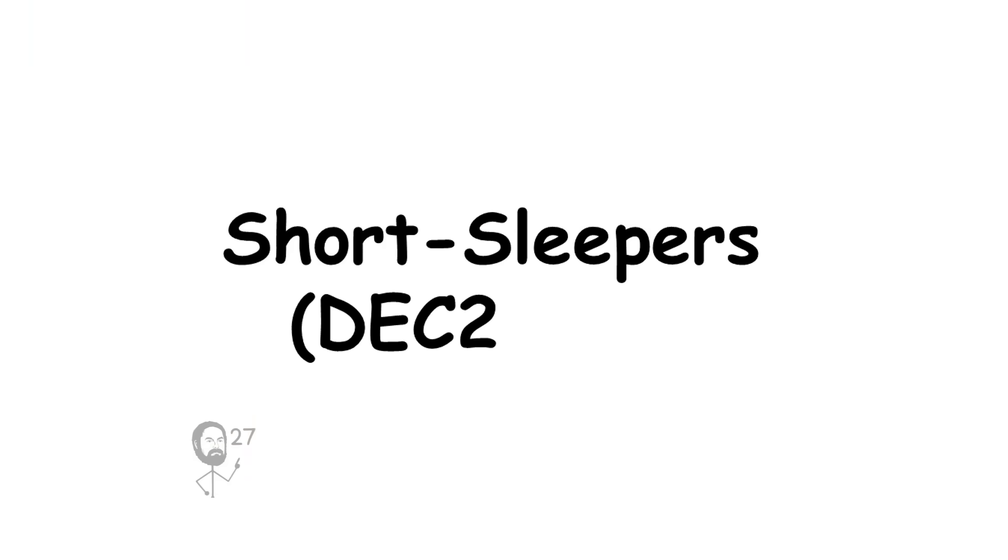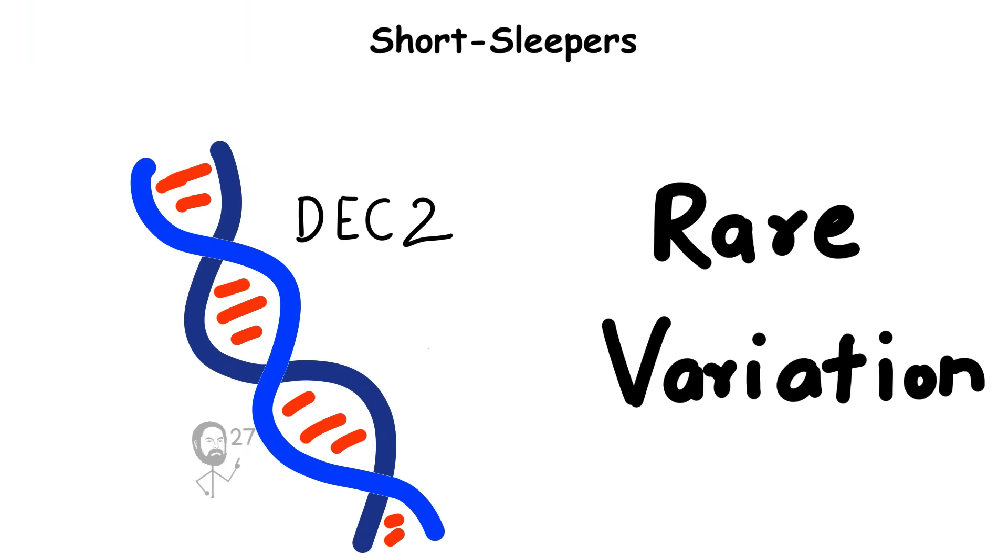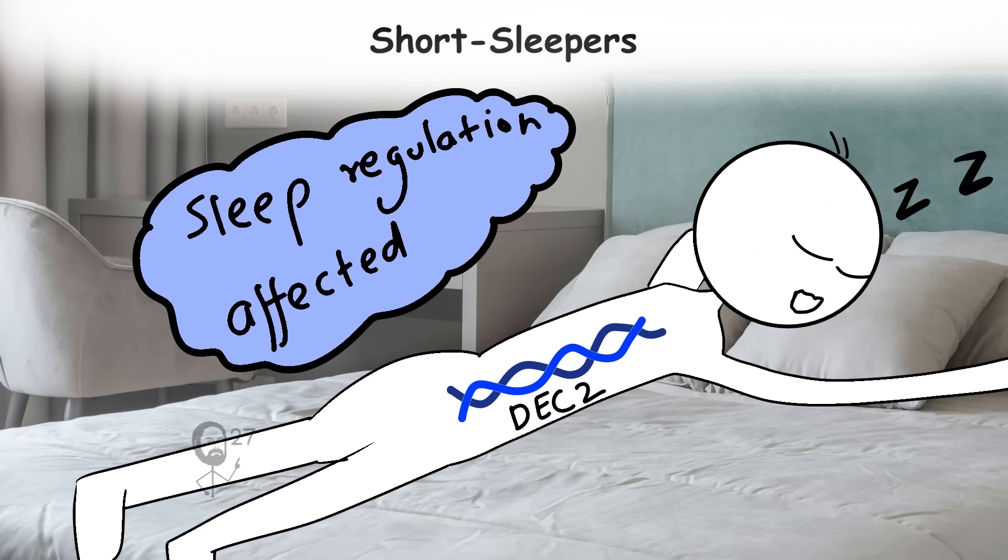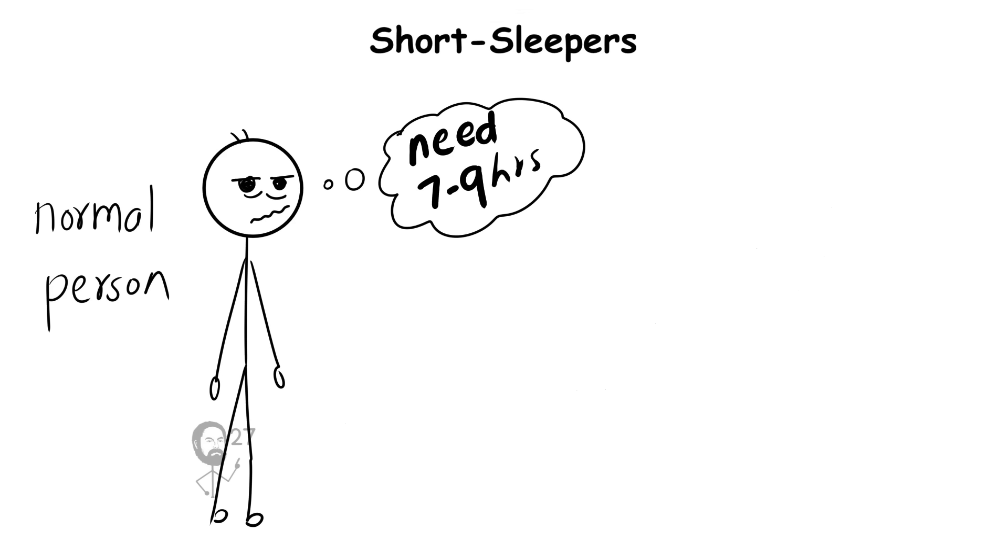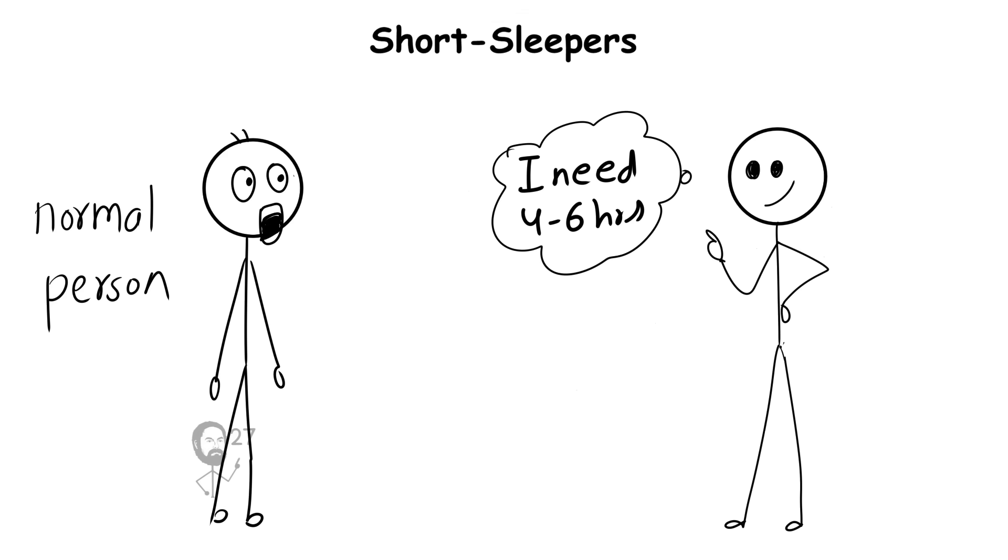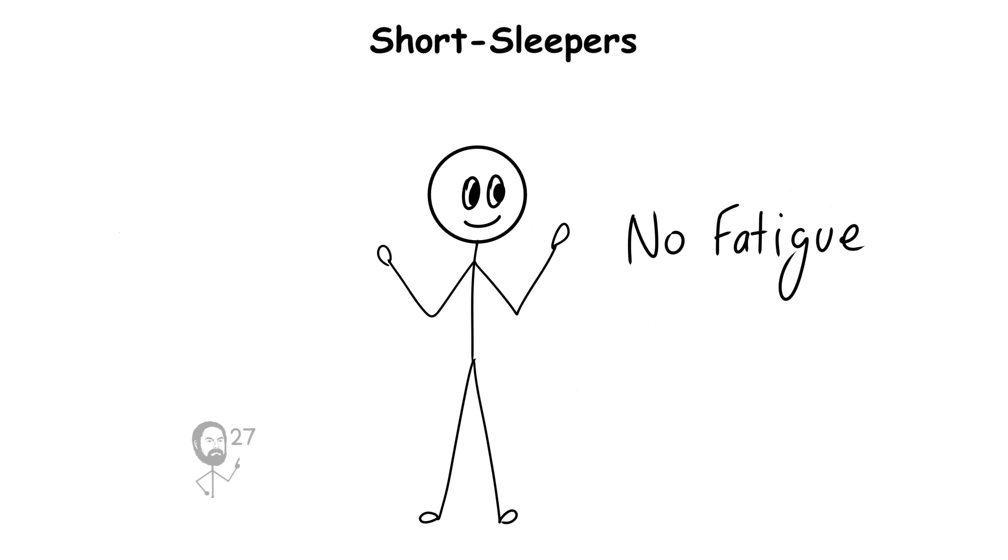Short sleepers. DEC2 gene. A rare variation in the DEC2 gene alters the body's internal regulation of sleep. While most people need seven to nine hours to function well, short sleepers thrive on as little as four to six hours without showing signs of fatigue or cognitive decline.